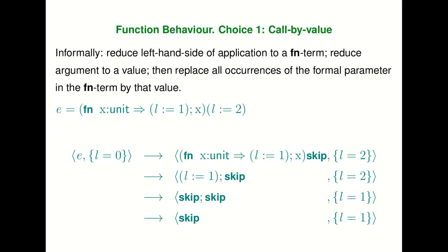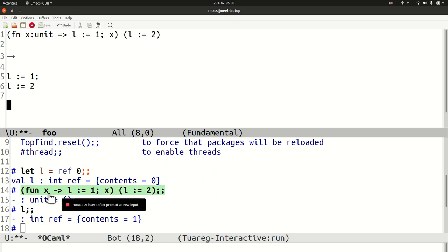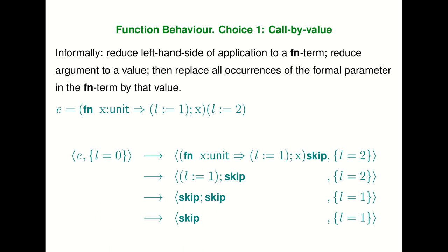Instead of evaluating by substituting L gets assigned to two for x, OCaml is doing something different. This brings up the idea of evaluation order. What OCaml is doing is, in fact, evaluating L gets assigned to two first, so then L is two. Then it passes this unit to x, and now the body of the function sets L to one and returns unit — so we get one as the contents of L. This means that when we have state in our programming language, the order we evaluate expressions in can affect the meaning of the program. In a language like Java, the language specification actually has to specify what the evaluation order is — it says it must be left-to-right.